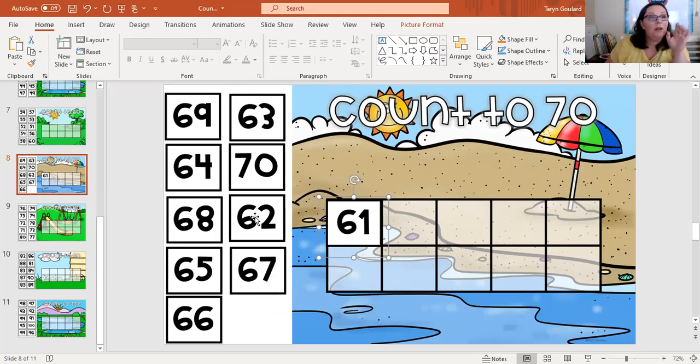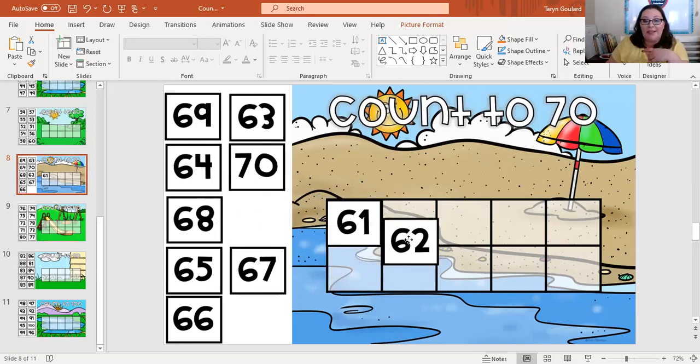So what number comes next after 61? 70. Not 70 yet. We've got six groups of 10 and one one. Remember our pattern. The six groups of 10 is going to stay through most of these numbers, but the group of ones is what's going to change. So if 61 has one one, what comes after one? Two. So we're going to need our six groups of 10 and two ones, which ends up being 62.